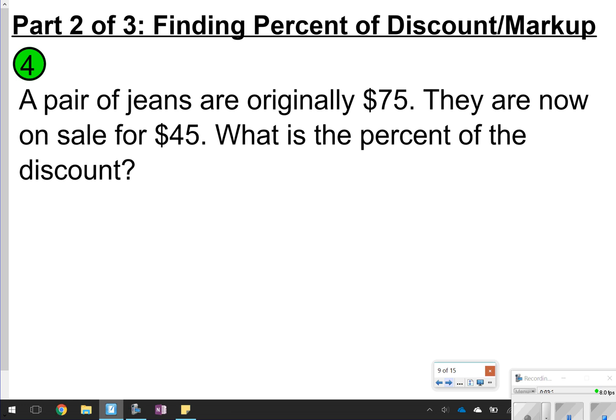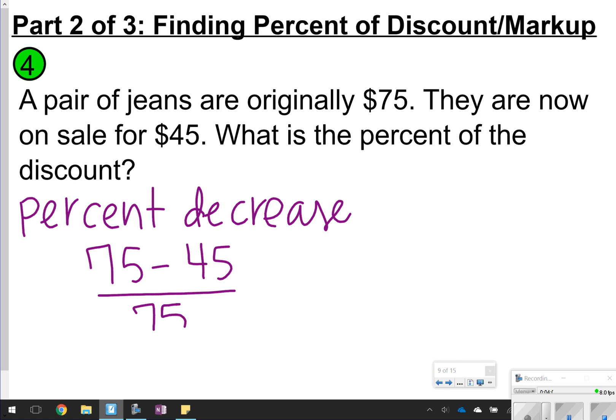The next one we're going to try is finding percent of a discount and markup. You're actually going to try this one and work it out with me as we go. It says the pair of jeans are originally $75, and they're now on sale for $45. So what is the percent of the discount? Again, if we don't know the percent, you can use the percent equation or the percent proportion. I like to think of this, though, as percent increase or percent decrease. And we just learned that in the previous lesson. So remember, we would take the original and subtract by the new amount, and then divide by the original.